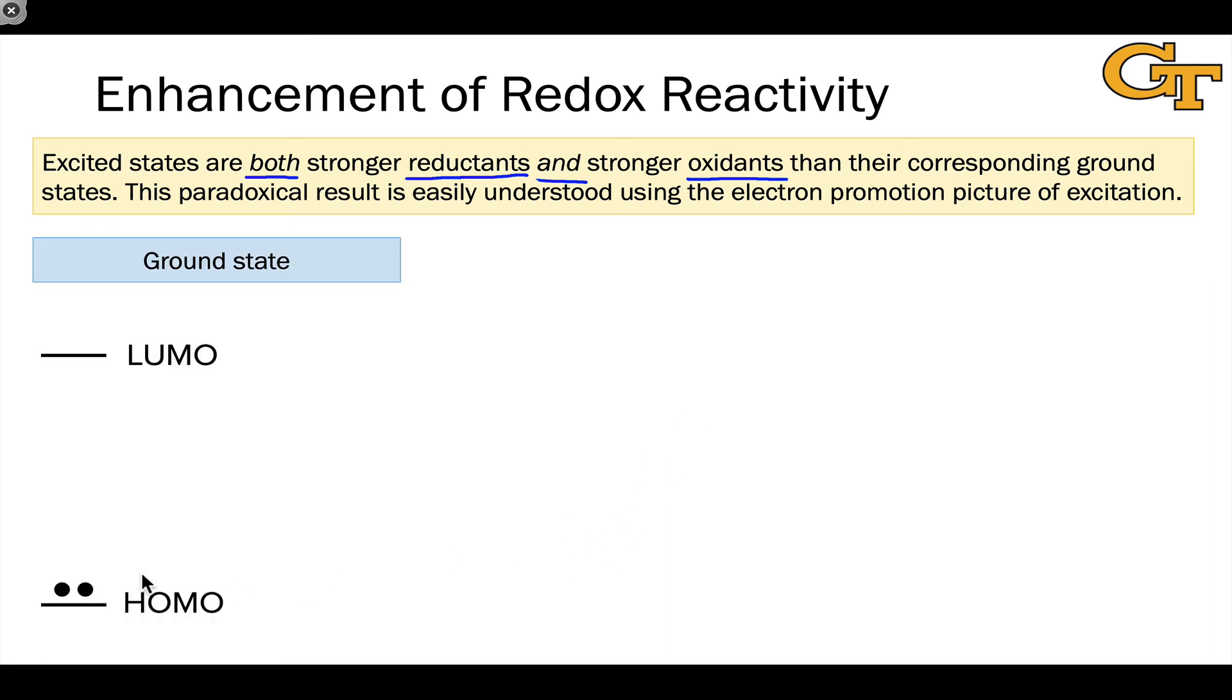In the ground state picture, let's say we're looking at a HOMO-LUMO excitation. An electron is promoted from the HOMO to the LUMO—very familiar at this point. This creates an excited state with two SOMOs: a high-energy SOMO (the SOMO-H) and a low-energy SOMO (the SOMO-L).